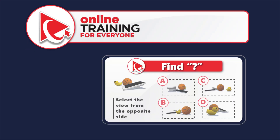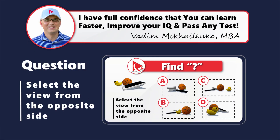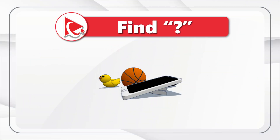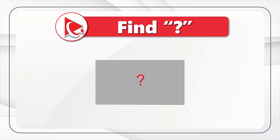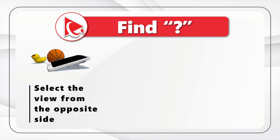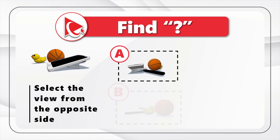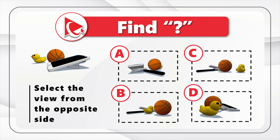Here's an amazing question to test your spatial reasoning. You are presented with a three-dimensional view, and you need to select the view from the opposite side out of four possible choices: A, B, C, and D. Take a close look — it may not be as easy as it seems.